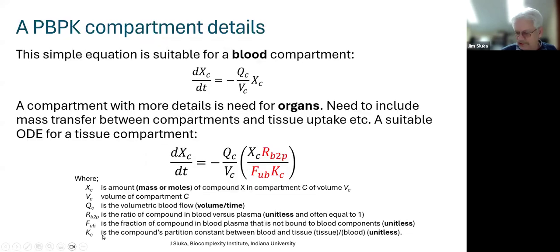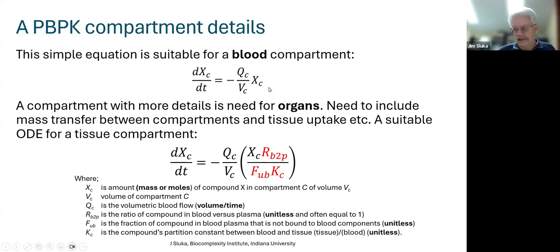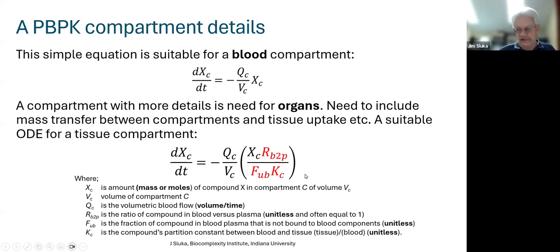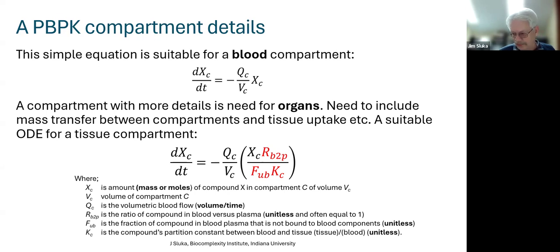PBPK modeling is relatively straightforward. The rate of change of a compound within a compartment is related to the volumetric flow QC divided by the volume of the compartment times the amount of compound — this is an equation for exiting a simple compartment. For organ compartments you need to account for the fraction unbound in serum versus bound to serum proteins, the ratio of red blood cell volume to plasma volume, and whether red blood cells themselves are carrying the compound.